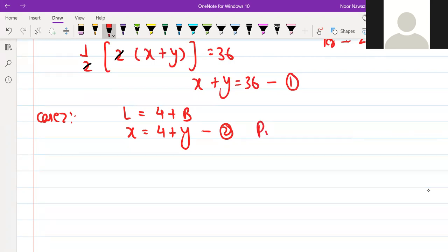So this will be 1, put in 1. So you will have 4 plus y plus y is equals to 36. So 2y is equals to 32.